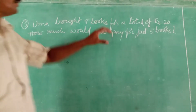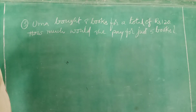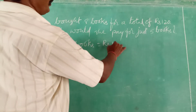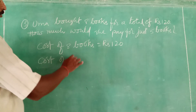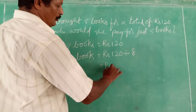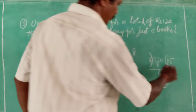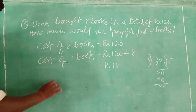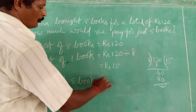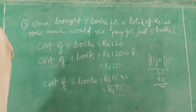Solution: Cost of 8 books = Rs. 120. Cost of 1 book = Rs. 120 divided by 8, which equals Rs. 15. Now cost of 5 books = Rs. 15 into 5. 15 fives are 75. Cost of 5 books = Rs. 75.